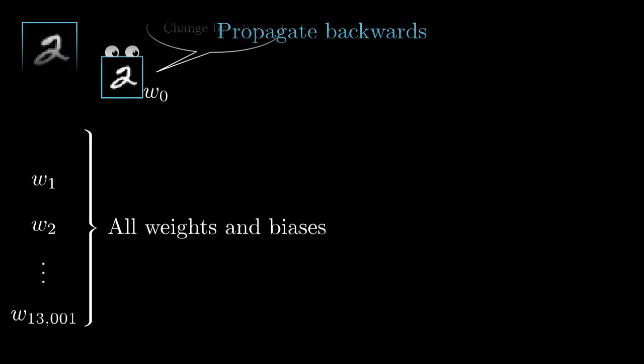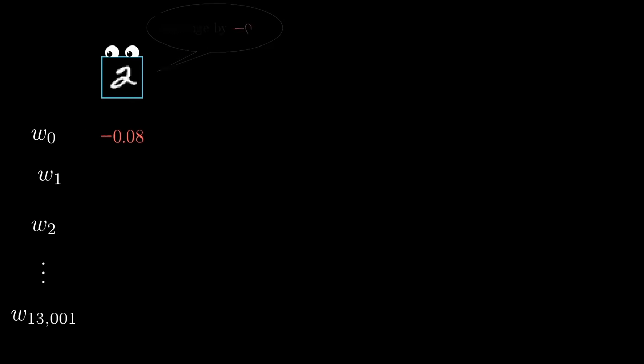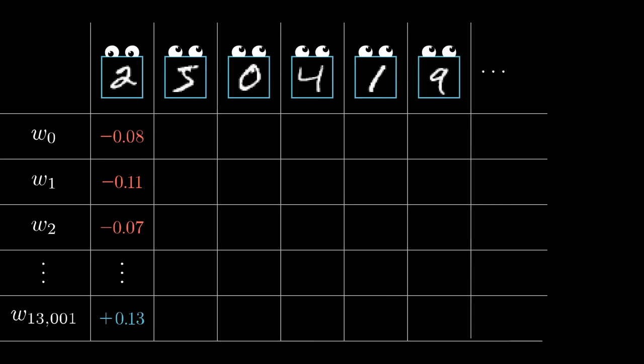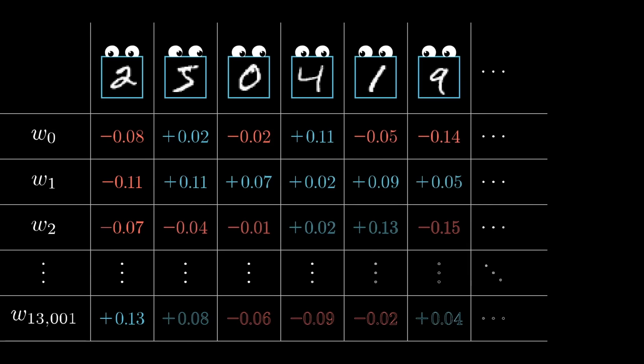And zooming out a bit further, remember that this is all just how a single training example wishes to nudge each one of those weights and biases. If we only listened to what that 2 wanted, the network would ultimately be incentivized just to classify all images as a 2. So what you do is you go through this same backprop routine for every other training example, recording how each of them would like to change the weights and the biases, and you average together those desired changes.